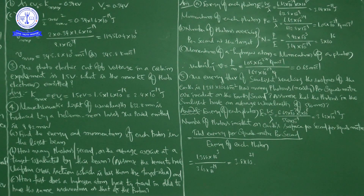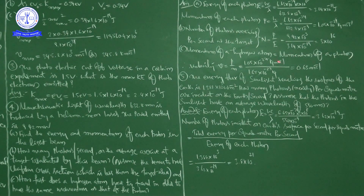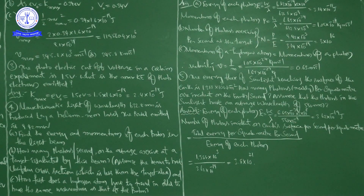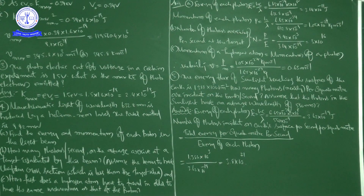For part B — number of photons arriving per second: N = P/E. Power P = 9.42 milliwatts = 9.42×10⁻³ W. Energy per photon E = 3.14×10⁻¹⁹ J. Dividing gives N = 3×10¹⁶ photons per second.